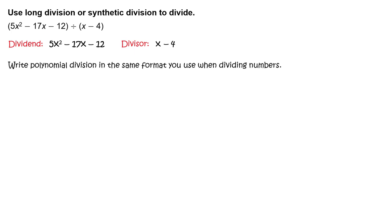Write polynomial division in the same format you use when dividing numbers. Write the quantity 5x squared minus 17x minus 12 divided by the quantity x minus 4.